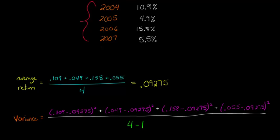Here's what we do to get the variance. We're going to take each year's return, so 2004 for example, that 0.109, we're going to take that and we're going to subtract the 0.09275. The average return, you can think of that as the mean.